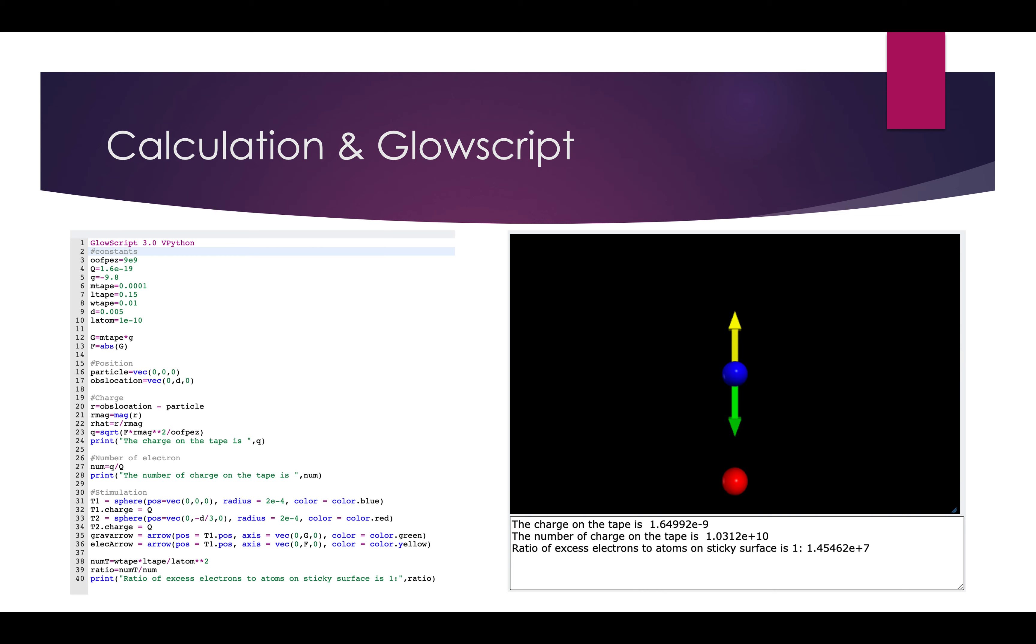And here is my code in calculation and the diagram it gives me from Glow Script. So, we have the Coulomb's constant as 9 times 10 to the 9th, our Q as the constant for the charge is 1.6 times 10 to the negative 19, and our gravity constant as negative 9.8 because it's pointing downward. We have the mass of the tape M_tape equal to 0.0001, the length of the tape L_tape equal to 0.15, and the width of the tape W_tape equal to 0.01.